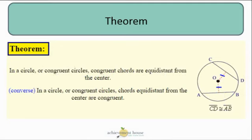So in a circle or congruent circles, congruent chords are equidistant from the center. And the same if chords are equidistant from the center, then they are congruent.